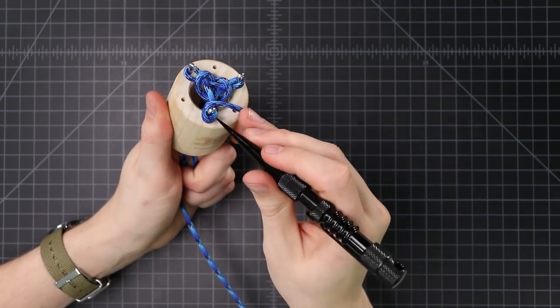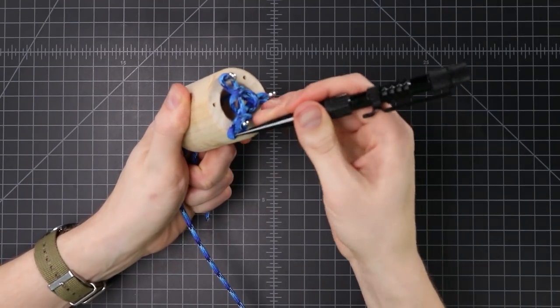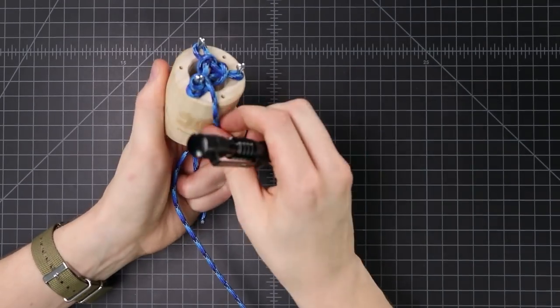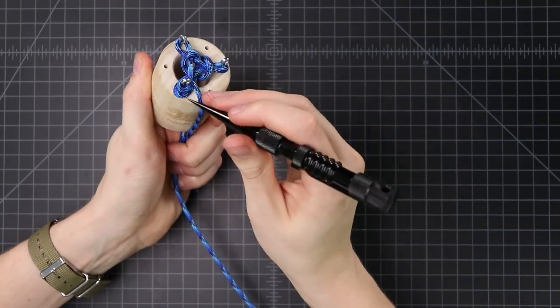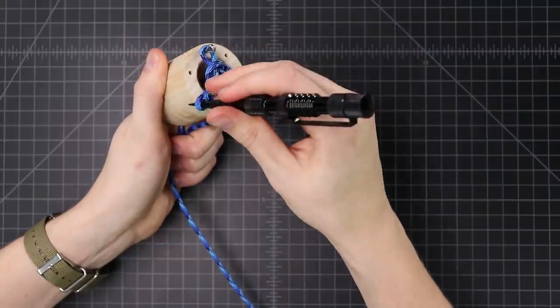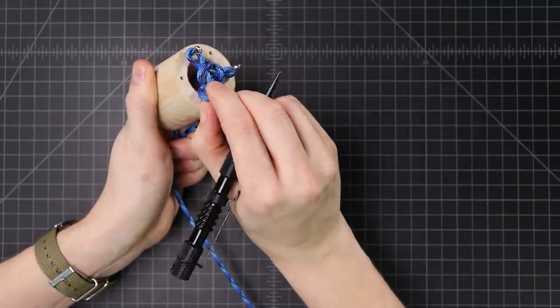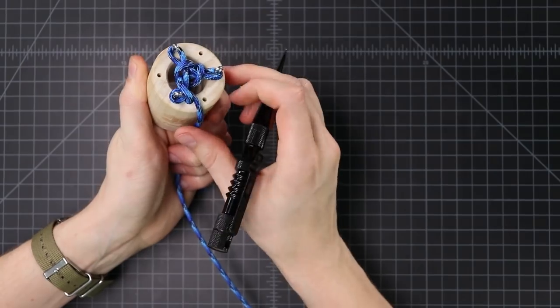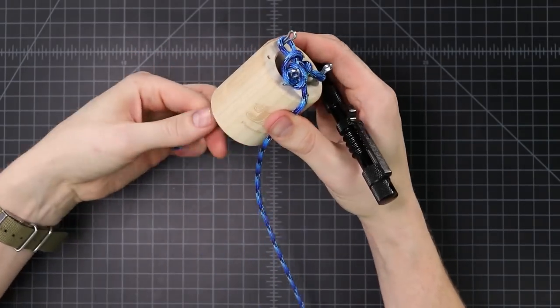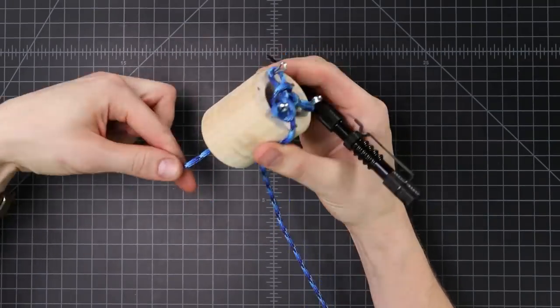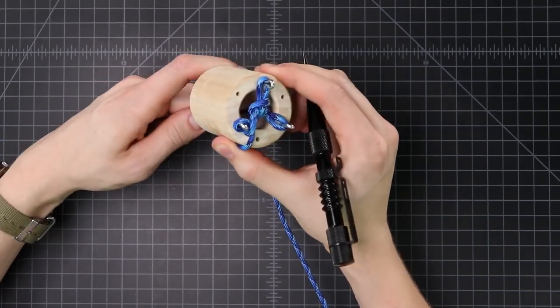Last one. Same thing. Grab the bottom loop and here's where we're gonna have to hold on to our slack and pull it over that loop and off the peg. Now we're gonna pull our tail end coming out the bottom to just kind of pull up that slack so everything stays in place.